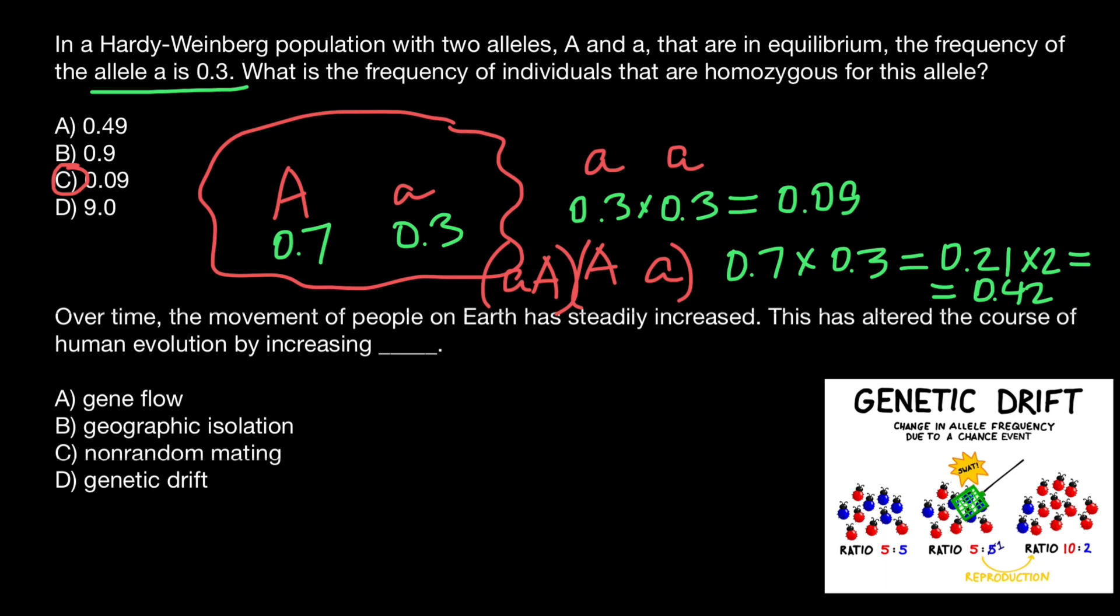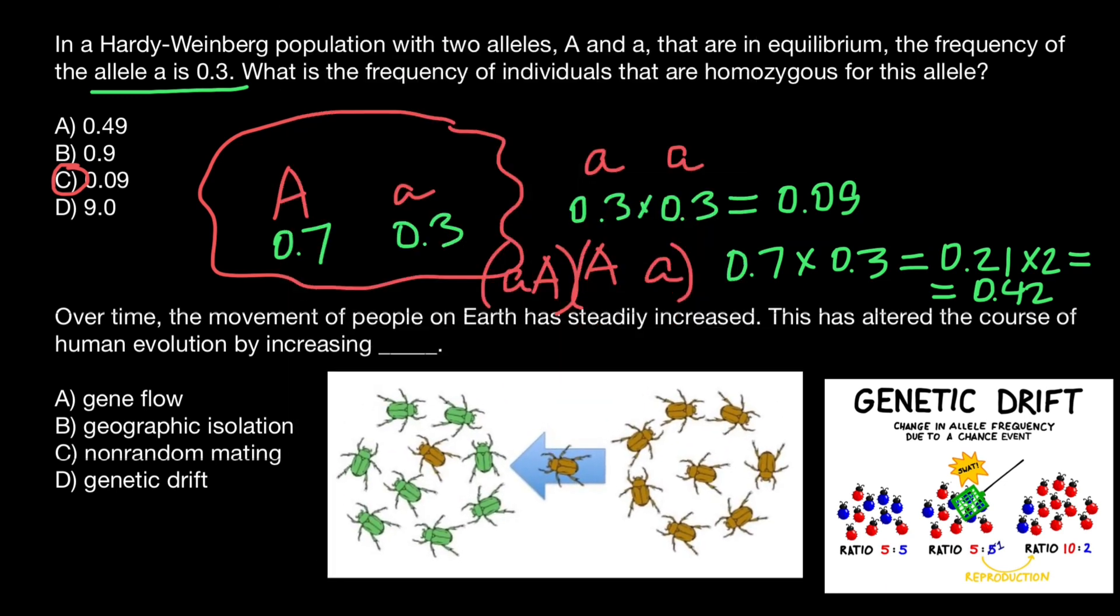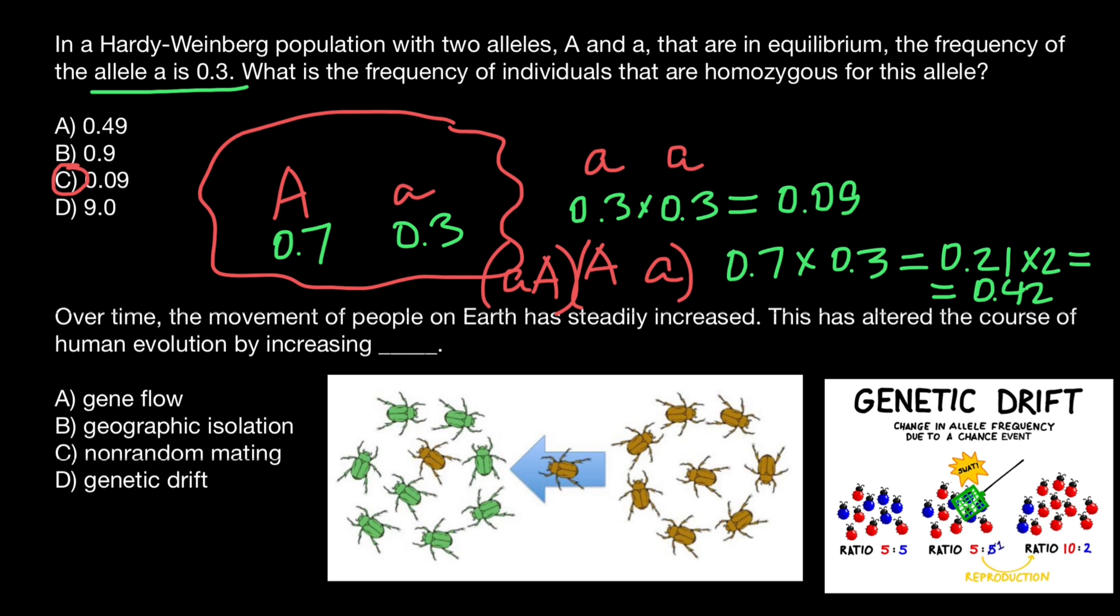Now, as you see, the only one answer left is A, gene flow. And I also want to demonstrate gene flow with another picture, because I know that many students mistake gene flow and genetic drift. So now we see an example of genetic drift, and here's an example of gene flow.